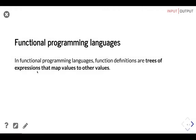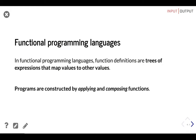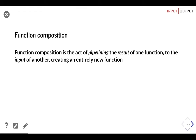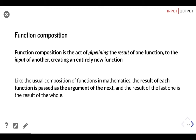Programs are constructed by applying and composing functions. Function composition is the act of pipelining the result of one function to the input of another, creating an entirely new function — like the usual function composition in mathematics. The result of each function is passed as the argument of the next, and the result of the last one is the result of the whole.